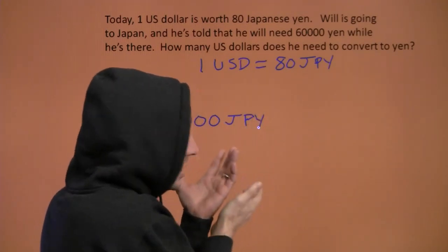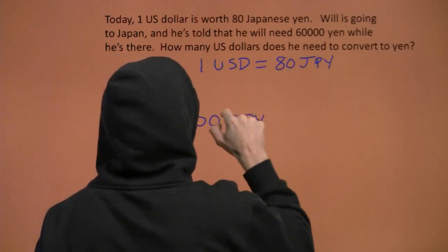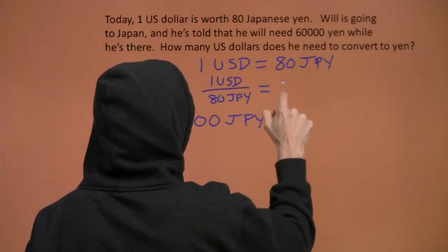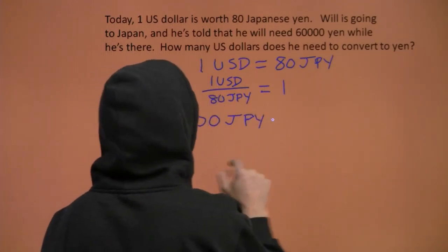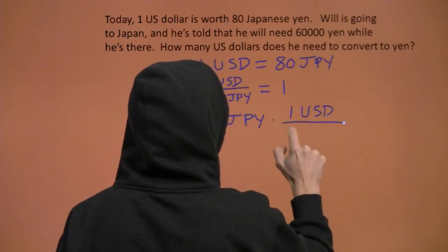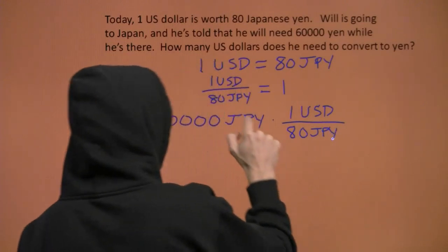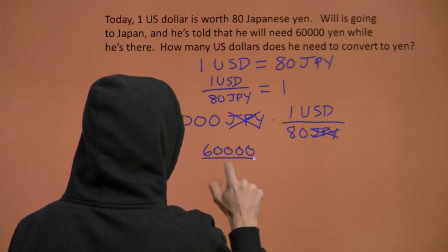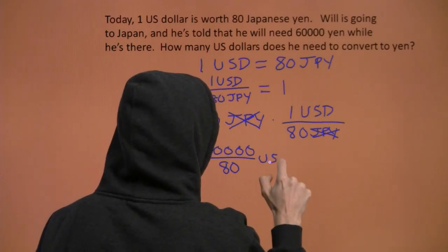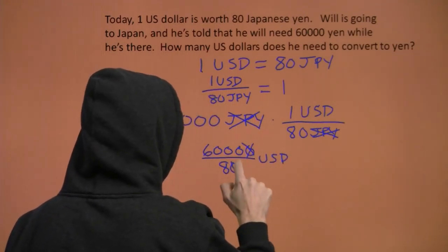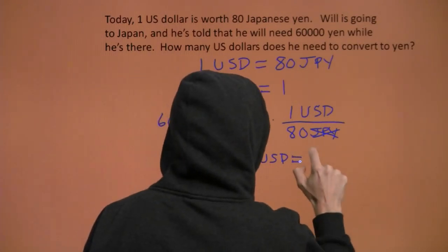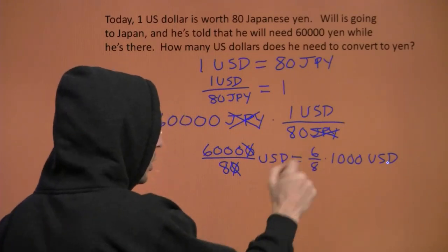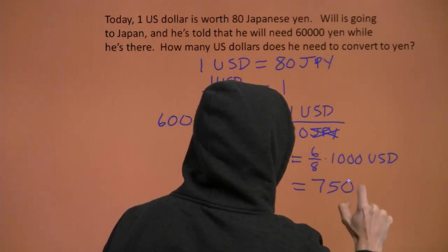I'm going to need a conversion factor with the Japanese yen in the denominator to cancel with this. So I'm going to divide both sides by 80 Japanese yen, and I'm going to have one U.S. dollar over 80 Japanese yen equals one. That's my conversion factor. I can just multiply our 60,000 yen by this, and sure enough, I've got yen in the numerator and in the denominator — they cancel out. I'm left with 60,000 divided by 80 U.S. dollars. 60,000 divided by 80 — I can take off a zero — I've got 6,000 divided by 8. That's 6 eighths times 1,000 U.S. dollars. 6 eighths is 3 quarters. 3 quarters of 1,000 is 750 U.S. dollars.